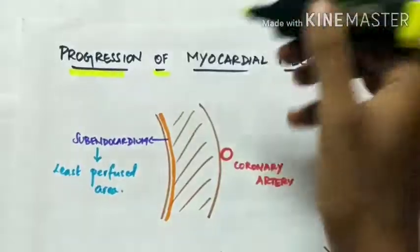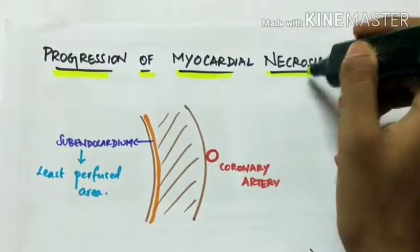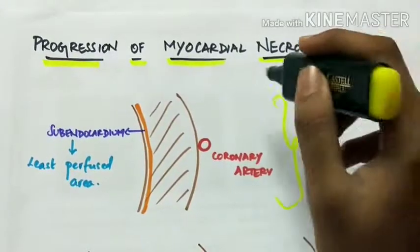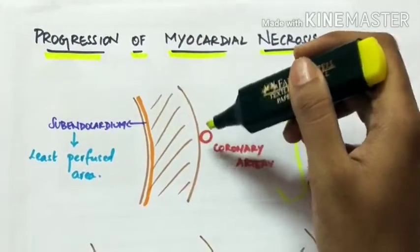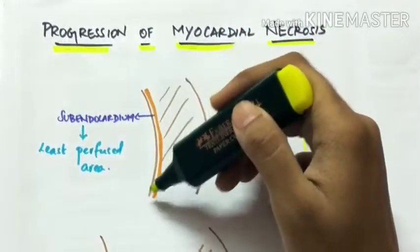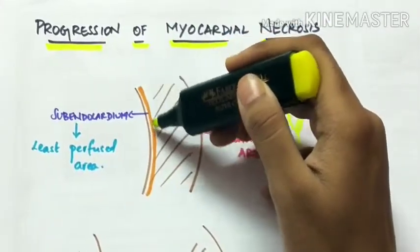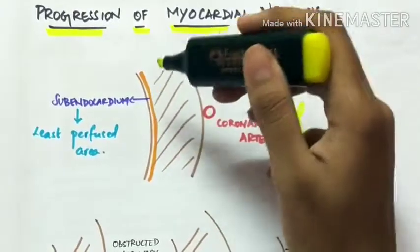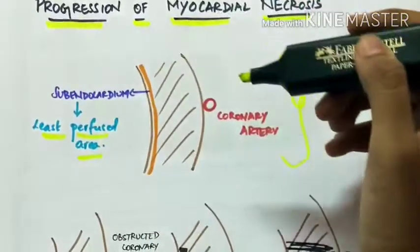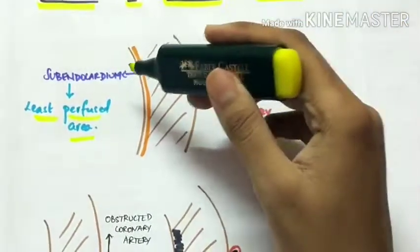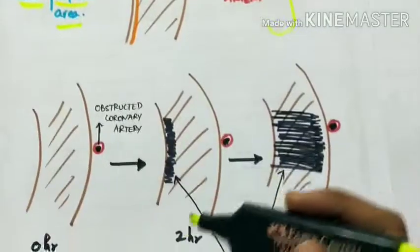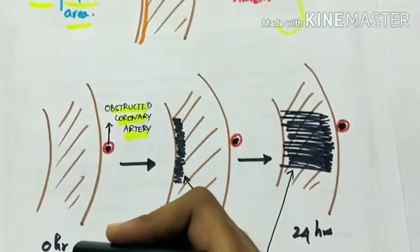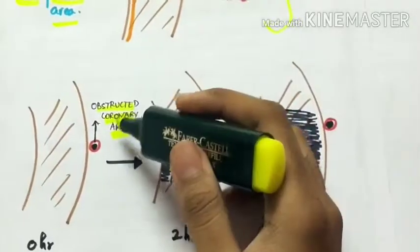The progression of myocardial necrosis: a section of myocardium showing the coronary artery, myocardium, and endocardium. The area shown in orange is the sub-endocardium, which is the least perfused area in the myocardium and therefore more prone to myocardial necrosis. At 0 hours — the time of coronary artery obstruction — this is the baseline.